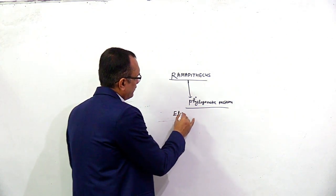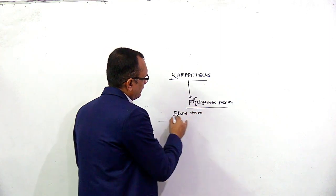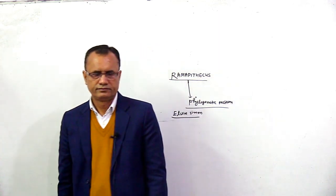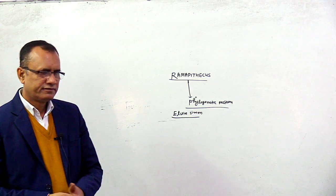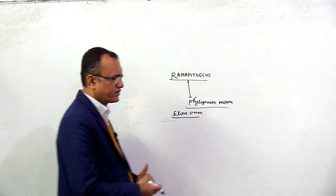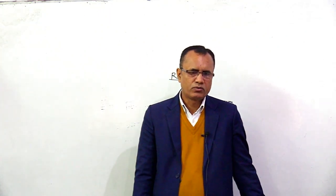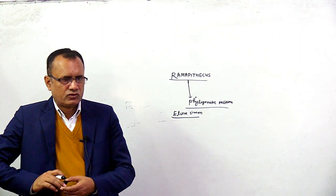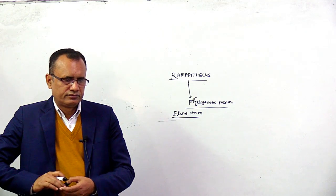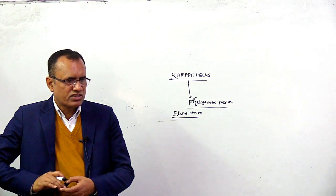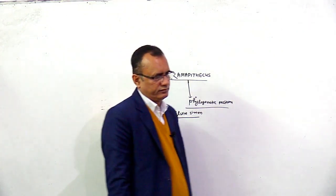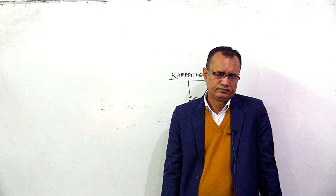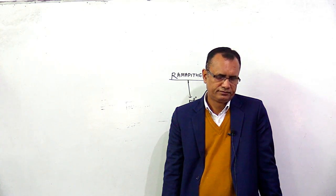R.S. Elwyn Simons shared that Ramapithecus was an ancestor of humans, because their dental arcade and dental pattern were continuously evolved in the human direction.